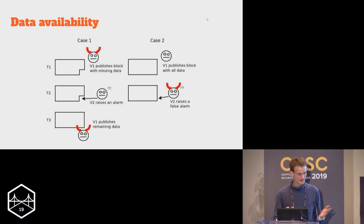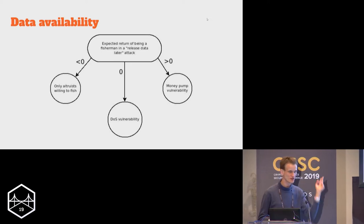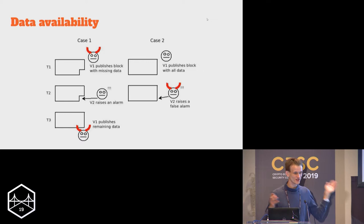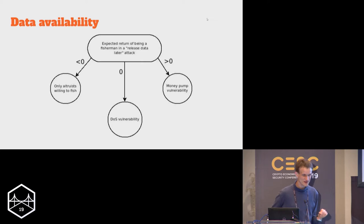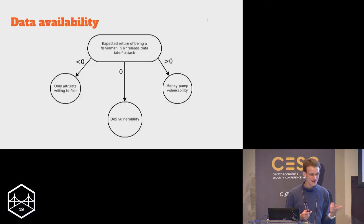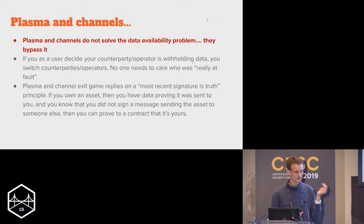Because of this, scaling of data is not something you can do easily — there's the fisherman's dilemma. The global system doesn't know which world you're in. So in either case you have to give the challenger the same reward. If the reward is greater than zero, you can raise false alarms and money-pump the system. If the reward is zero, you have a DOS vulnerability. If the reward is below zero, only altruistic actors will challenge. So there's a fundamental problem.